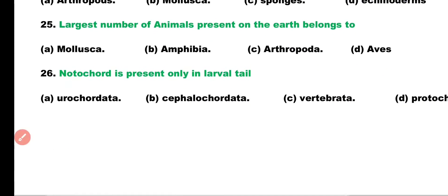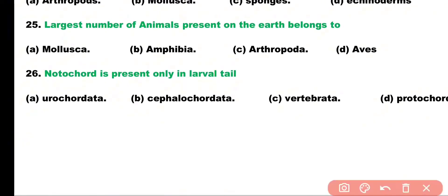Question number 25. Largest number of animals present on earth belongs to: mollusca, amphibia, arthropoda, or aves? Correct answer is Option C. Phylum Arthropoda has the largest number of animals present. The second largest phylum is Mollusca.